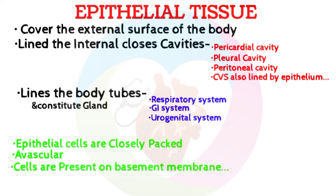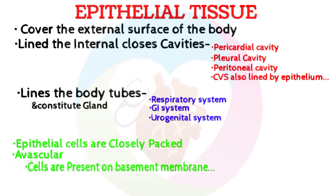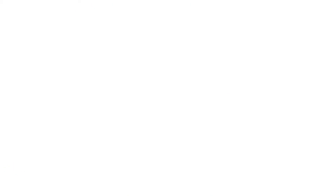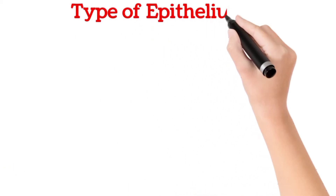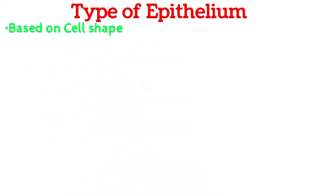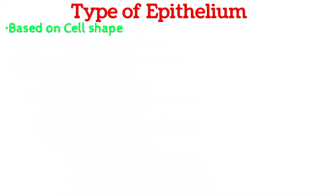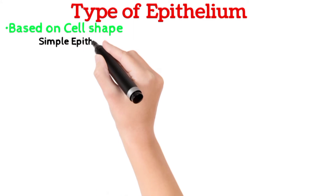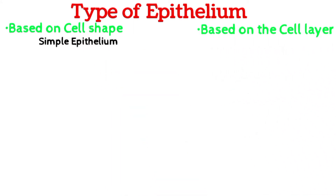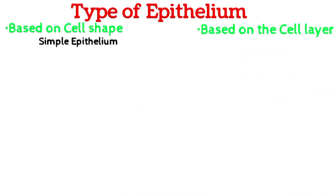Epithelium cells are present on the basement membrane. But in stratified epithelium, only a single layer rests on the basement membrane. Now, coming to the types of epithelium — based on cell shape or based on cell layer, we study the types inside simple or stratified epithelium.